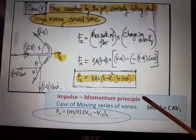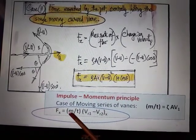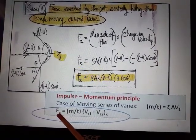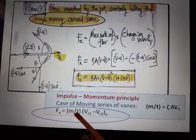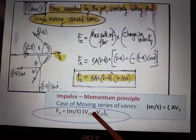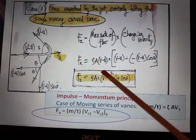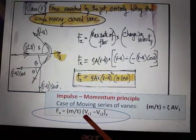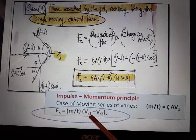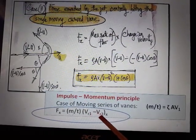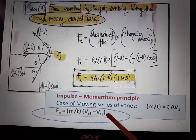Here, impulse momentum principle - you know that force in particular direction x is given by mass rate of flow times v1 into v1 minus v2 in the direction of x. Because it is moving vane, we have to take relative velocity at entry, relative velocity at exit in x direction.